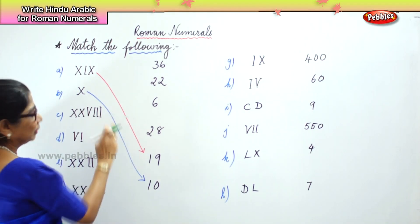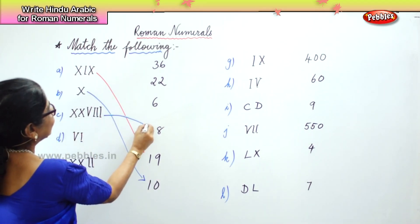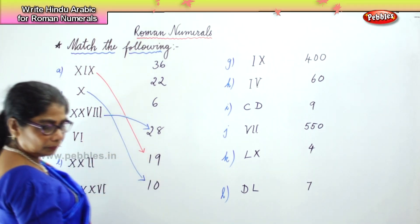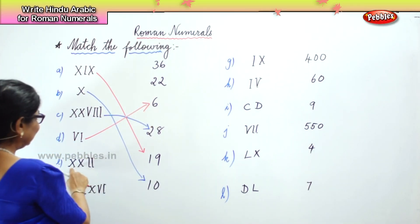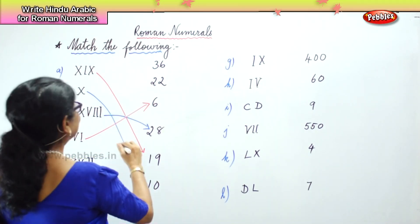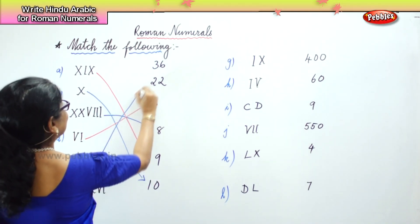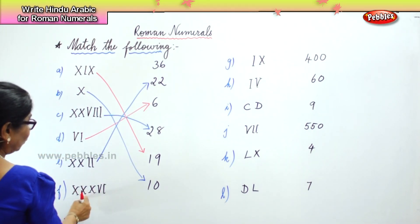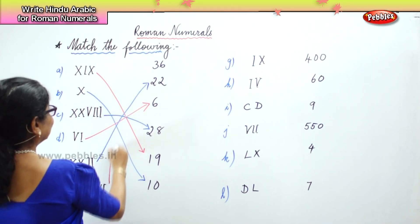So you have 28 over here, 28 over here. Next you have 6, which is here. Then 22 — that is 10, 20, and 2, which is 22. And then you have 10, 20, 30, 36. Finally you have 36.